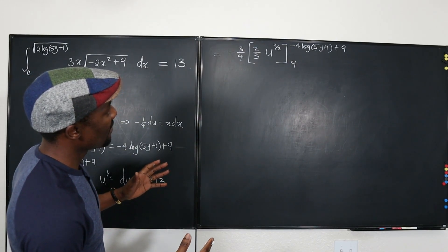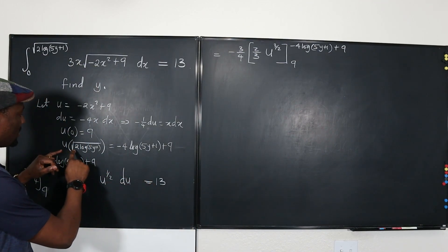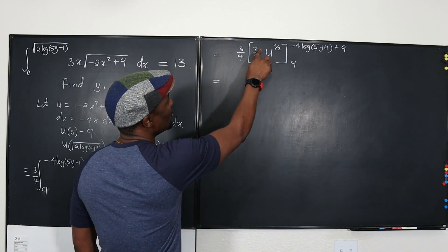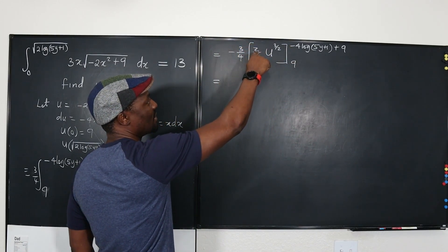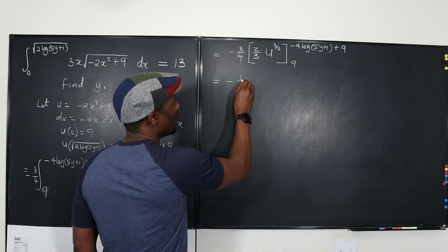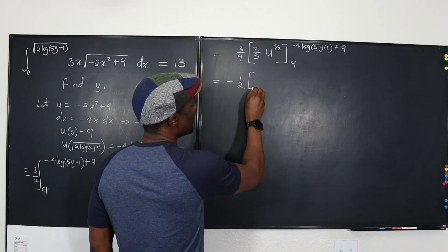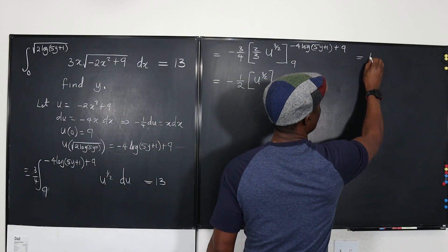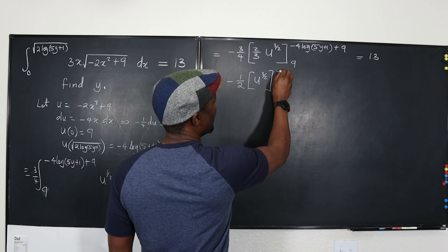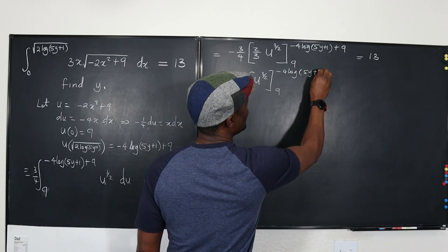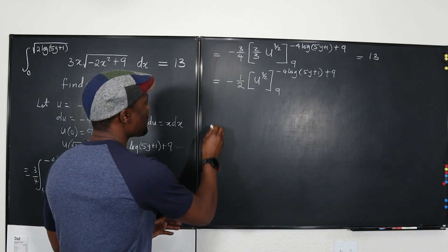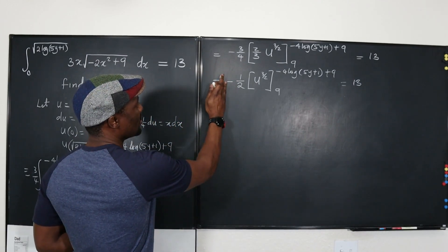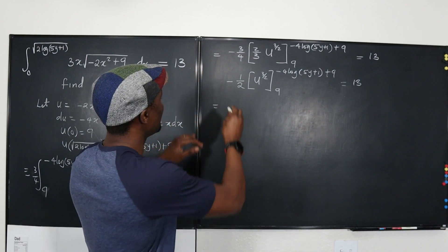So I want to be sure that this substitution was right. I think it was right. So let's go on. And now, let's evaluate. This 2 will cancel this. So before you evaluate, you can get rid of the constants first. So this cancels this. We're going to have negative 1 over 2. And then we're evaluating u to the 3 halves from 9 to the top part. And this is equal to 13. Because this is an equation, so I can remove this one because I now have an equal to sign.